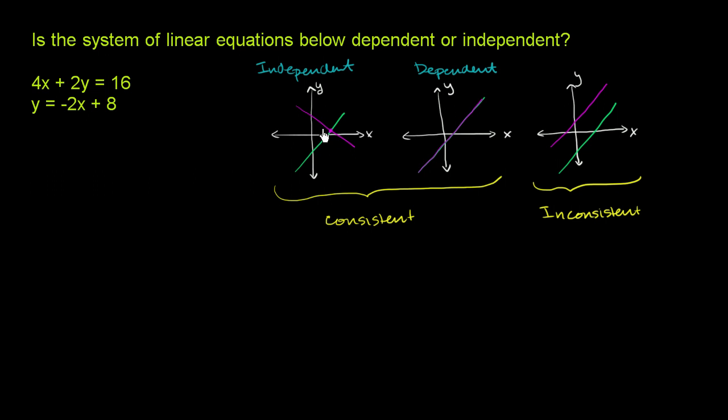So independent, both lines are doing their own thing. They're not dependent on each other. They're not the same line. They will intersect at one place. Dependent, they're the exact same line. Any point that satisfies one line will satisfy the other. Any point that satisfies one equation will satisfy the other. So with that said, let's see if this system of linear equations right here is dependent or independent.